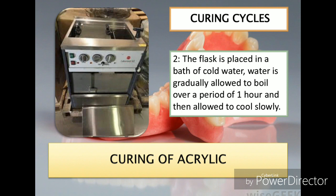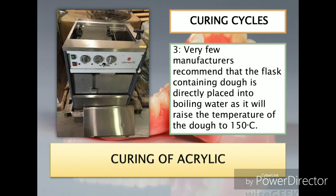In the second recommended curing cycle, the flask is placed in cold water and the temperature is raised up to the boiling point of water over the period of one hour. After one hour, the heat is turned off and the flask along with the water are allowed to cool at room temperature. The third curing cycle places the flask containing the dough directly into boiling water; this type is not recommended by many manufacturers as it can raise the temperature of the dough up to 150 degrees centigrade. Out of these three, only the second curing cycle is recommended by most manufacturers for heat-cure acrylic resins.